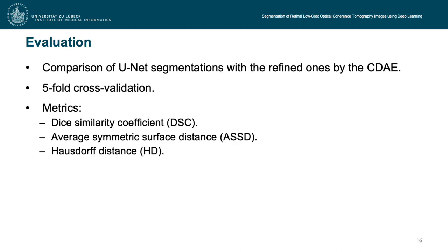For the evaluation, we compared the segmentation of the U-Net with the refined ones of the convolutional denoising autoencoder. We performed a five-fold cross-validation, and for each fold we divided the dataset into training, validation, and test datasets, ensuring that the disease distribution of the eyes remained the same. Evaluation metrics included the Dice similarity coefficient, the average symmetric surface distance, and the Hausdorff distance.